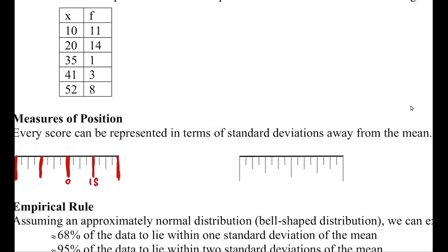So: 0, 1S, 2S. I'm only going to go out two standard deviations in each direction for now, because it's really just a matter of proving the point. So that's 1S and 2S. Just accentuate the quality of the S so that when you're reviewing your own notes, you can tell it's an S, not a 5.